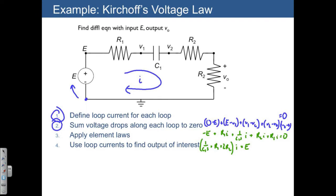The final thing we need to do is use loop currents to find the output of interest, which in this case is VO. Well, VO is just equal to I times R2. So once we've found I, we actually have an equation for VO. So I can just multiply both sides of this equation by R2. And that's going to give me an equation for VO. So then we have 1 over C1S plus R1 plus 2R2 multiplied by VO is equal to R2 times E.